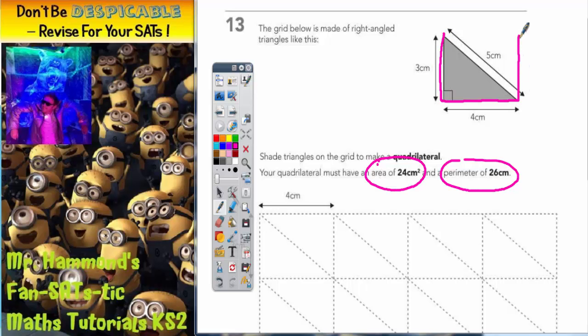The area of this rectangle would be length times width, L times W. The length of it is 4, the width of it is 3, so the area of that rectangle is 4 times 3, which is 12cm squared.